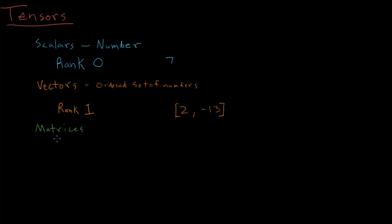And now matrices are rank two tensors, as you may have guessed. Rank two tensors. And these, instead of just being sort of a one-dimensional row or column of numbers, it's a two-dimensional set of numbers. There are two indices, you might say.